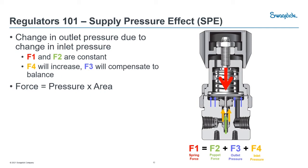Next we'll talk about supply pressure effect. This is something you might have heard of, and it tends to be very common in gas cylinder applications where you'll see your outlet pressure change. Supply pressure effect is that change in your outlet pressure due to a change in your inlet pressure. Going back to our balance of forces, F1 and F2 are constant — we've set our range spring and our poppet force is already selected. So we're left with F4 and F3. If we increase F4, we tend to decrease F3; if we decrease F4, our outlet pressure will increase.